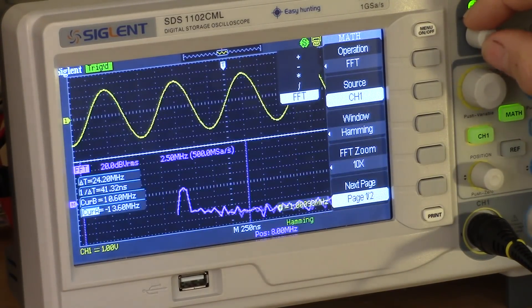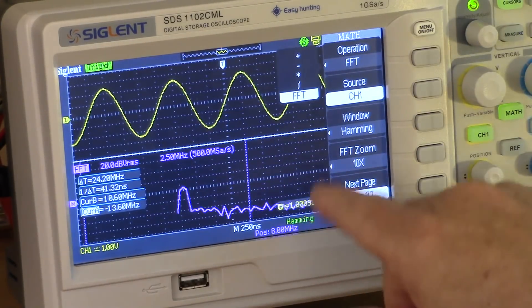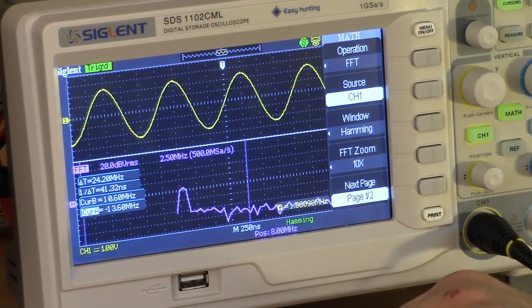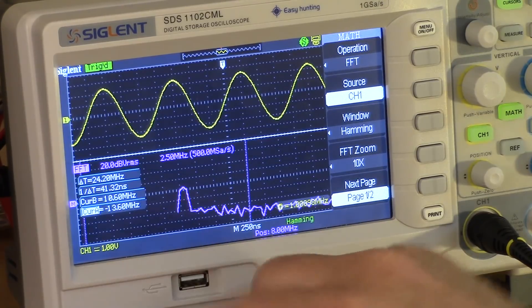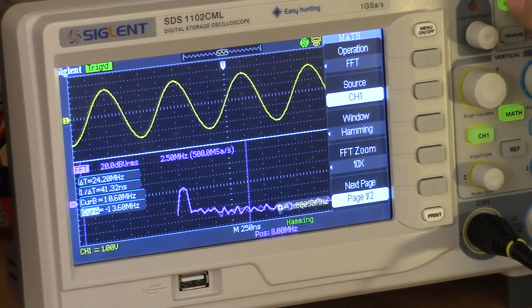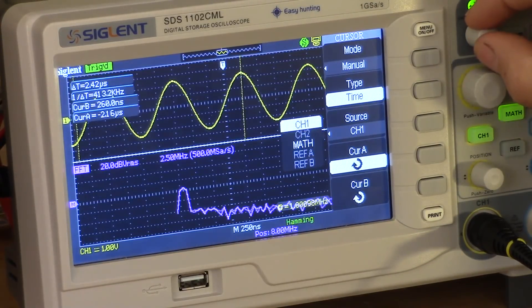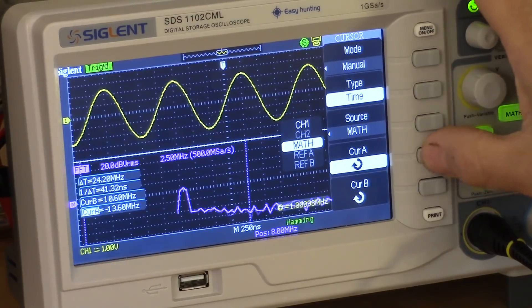But it does do FFTs, Fast Fourier Transforms, which we're doing here. We're doing it on Channel 1. It gives a split screen, although you can change that and have the FFT displayed as a full screen. And here we see the peak. That's where most of the energy is. I can hit the Cursors button again and tell it that I want to use the math channel for cursoring. And here's Cursor A.